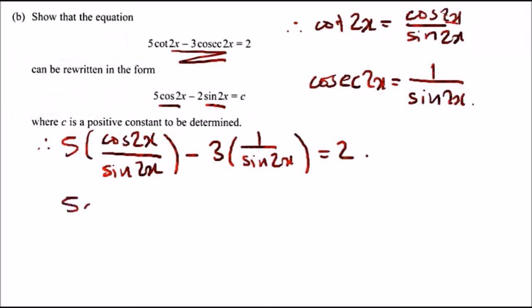Therefore, rearranging it by subtracting this and adding 3, we get 5 cos 2x minus 2 sine 2x equals 3.